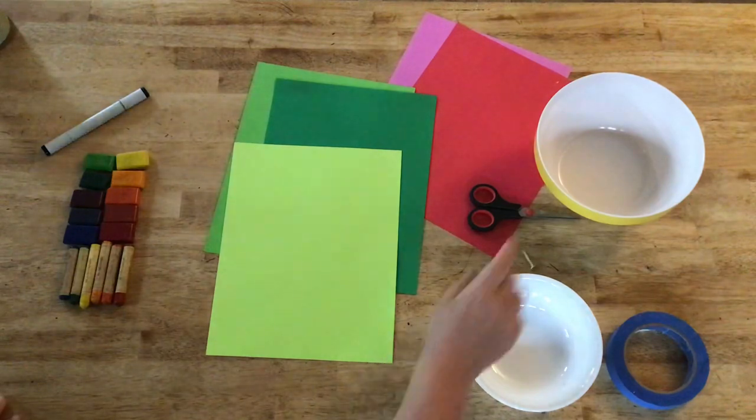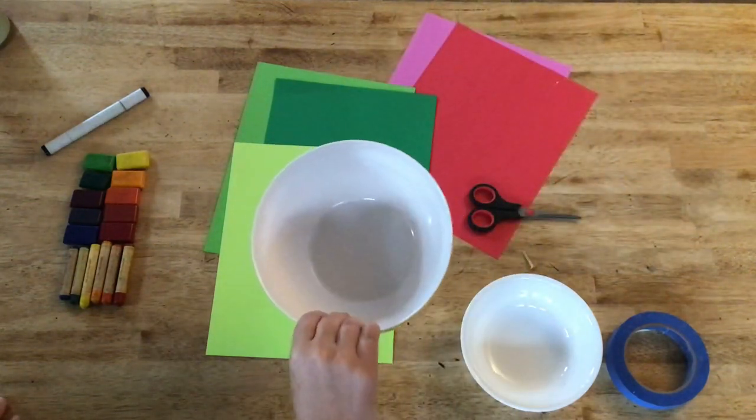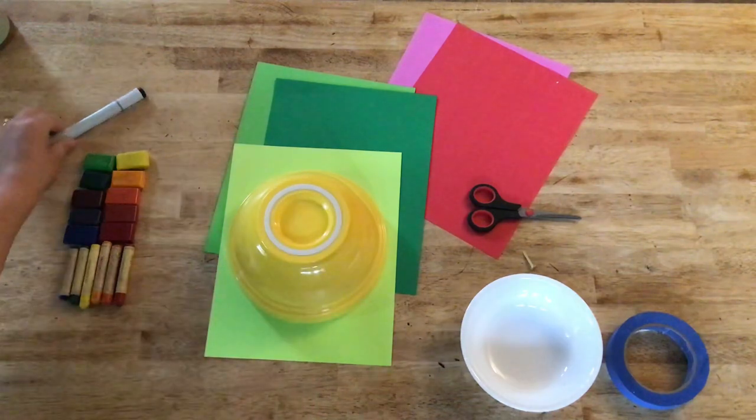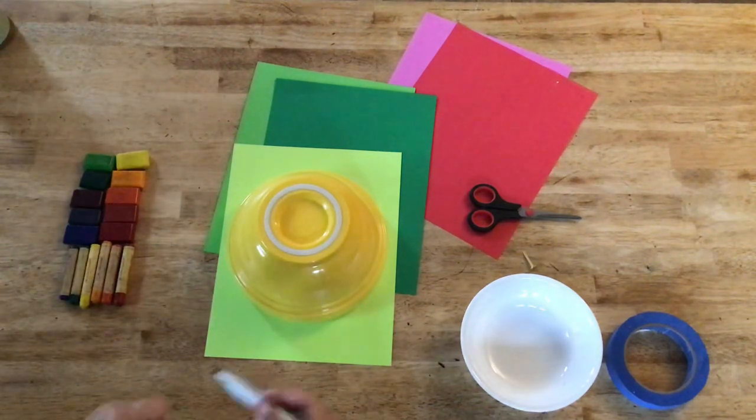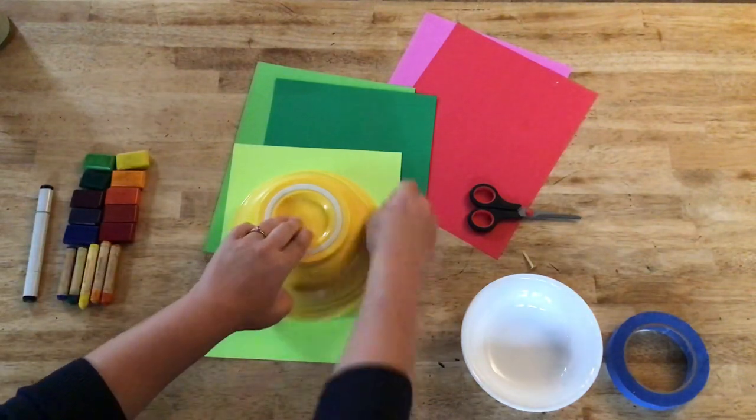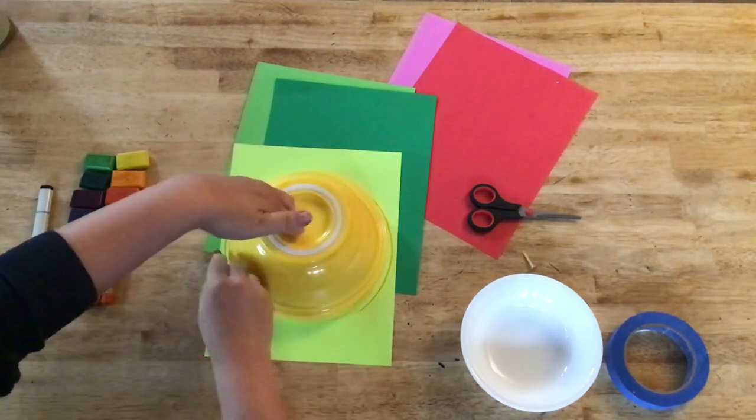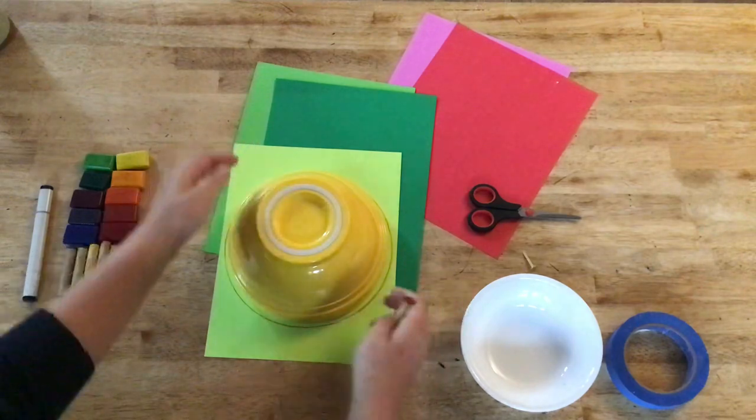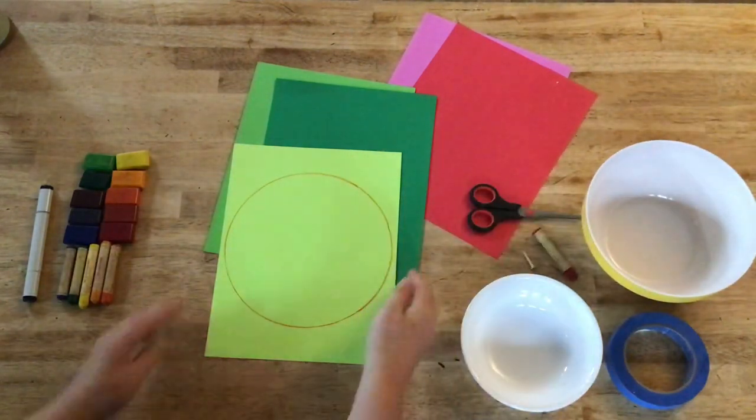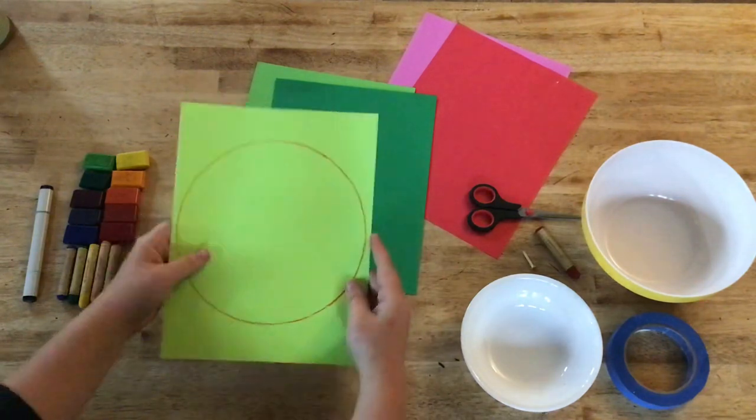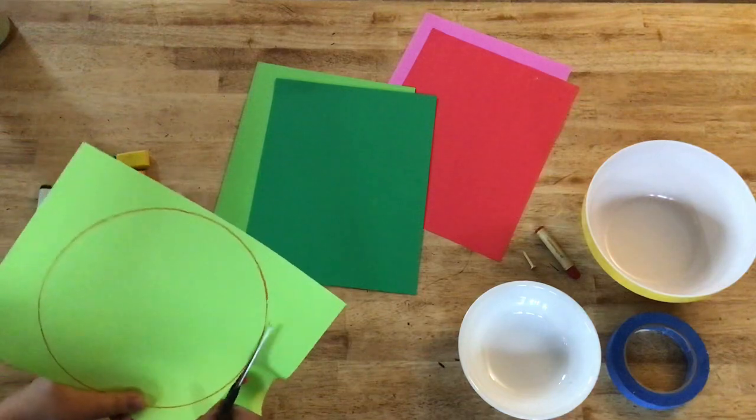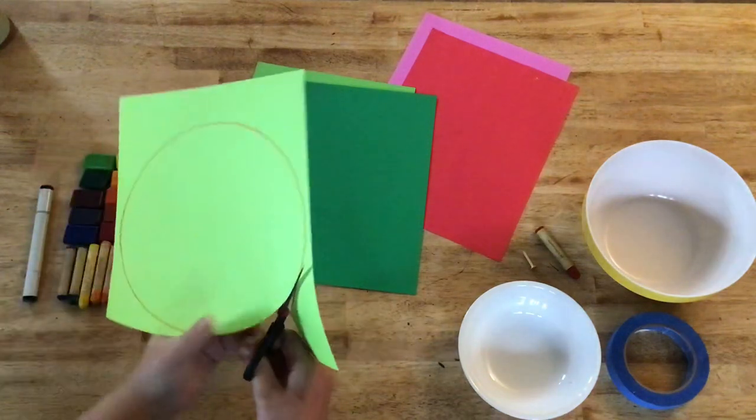For my largest circle, I think I'm going to choose my lightest green. So your largest circle, which I'm going to be using this yellow bowl, put it down on the paper, take a pen or a pencil, I'll use a crayon actually for this, and go ahead and trace around the bowl, making sure that it does not exceed the edges of the paper.